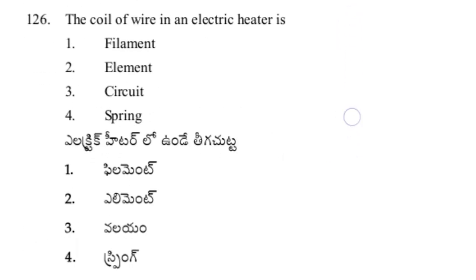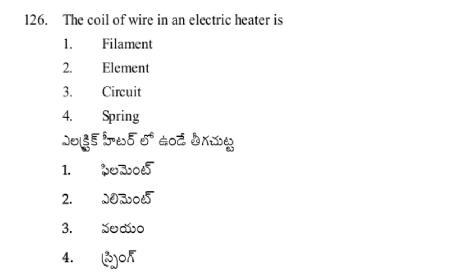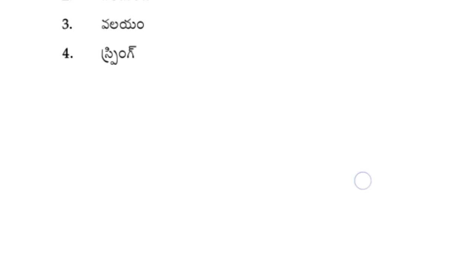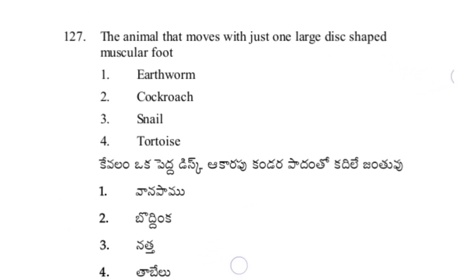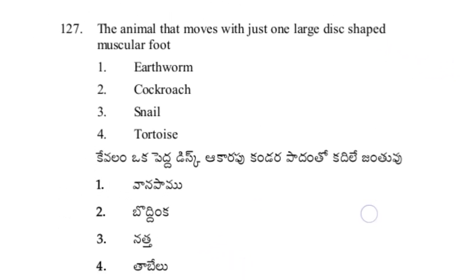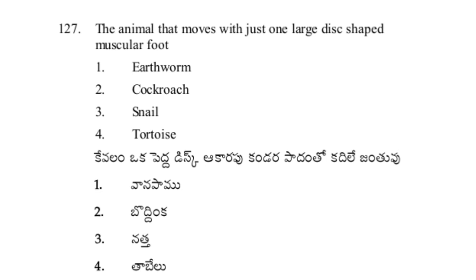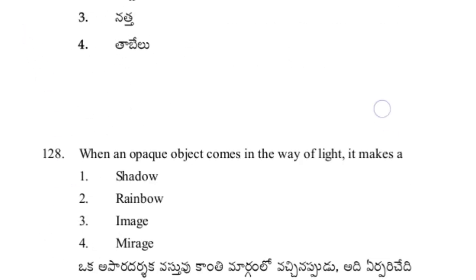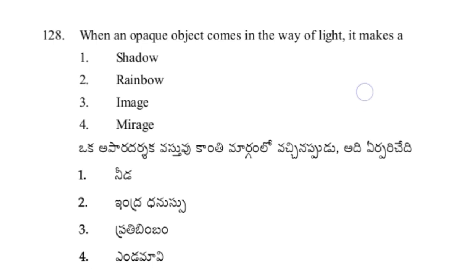The coil of wire in an electric heater is elements — option 2, answer. The animal that moves with just one large disc-shaped muscular foot — option 3, snail, answer.